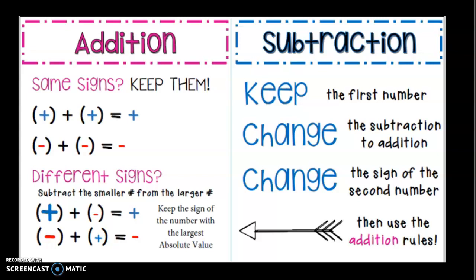The rules by themselves are not difficult. What gets difficult is when you're dealing with all of them at the same time and you have to remember which one does this, which ones are keep-change-change — that's when it gets the most complicated. So in this case, we're just going to do some examples. You can pause it, rewind it if it goes too fast or too slow.